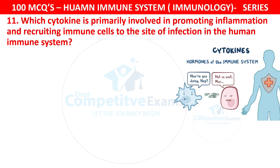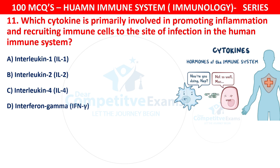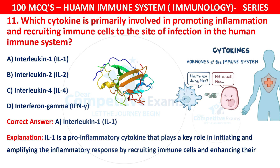Question 11. Which cytokine is primarily involved in promoting inflammation and recruiting immune cells to the site of infection in the human immune system? Your options are Interleukin-1 (IL-1), Interleukin-2 (IL-2), Interleukin-4 (IL-4), or Interferon-Gamma. The correct answer is A — Interleukin-1, IL-1. IL-1 is a pro-inflammatory cytokine that plays a key role in initiating and amplifying inflammatory responses by recruiting immune cells and enhancing their activation at the site of infection or injury.